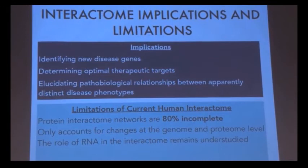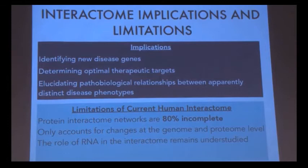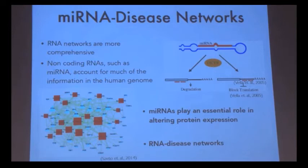So what are the implications of the human interactome? If complete, we could use it to identify new disease genes, determine optimal therapeutic targets, and elucidate relationships between seemingly distinct disease types. However, the current human interactome is thoroughly incomplete — it contains networks at the gene and protein level, but it is missing networks at the RNA level.